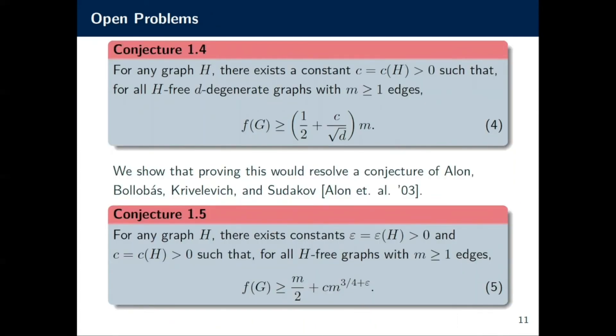So after doing the study and looking at it, we believe that the following should be true: that for any H, regardless of what it is, there should exist a constant that depends on that H such that for any H-free d-degenerate graph or max degree d if you must, with m edges, the surplus is going to be of the order cm/√d. This would match the triangle case, but none of the other cases for clique-free, for example, quite get down to √d.